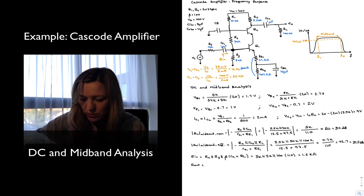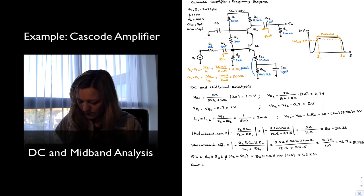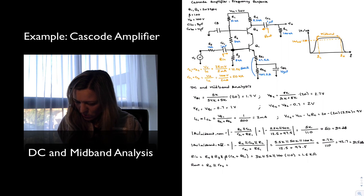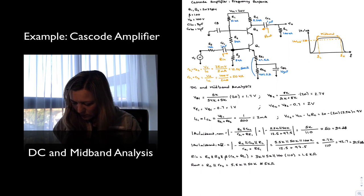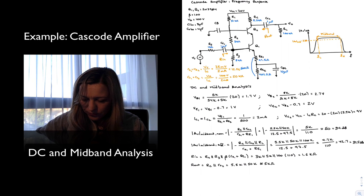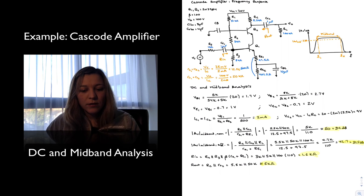Finally, the output resistance is the resistance looking into the collector of Q2, which is RC in parallel with little rO2 — so 5.5K in parallel with 50K — which is approximately 5 kilohms. Now we can highlight the important results: our collector currents are 2mA. Next we're going to calculate the frequency response.